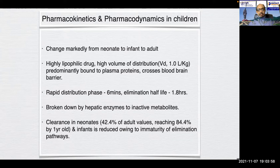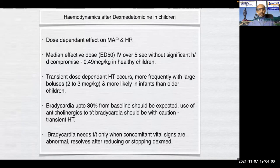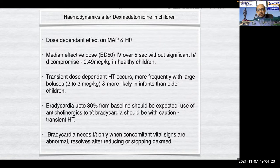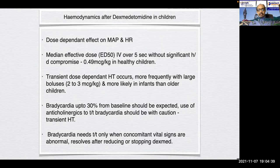Clearance in neonates and infants is reduced due to immaturity of elimination pathways — around 42.4% of adult values in neonates, reaching about 84.4% by one year of age. Hemodynamics show dose-dependent effects on mean arterial pressure and heart rate. The median effective IV dose over 5 seconds without significant hemodynamic compromise was 0.49 mcg/kg in healthy children. Bradycardia up to 30% of baseline should be expected, and the use of anticholinergics to treat it should be with caution due to risk of transient hypertension.